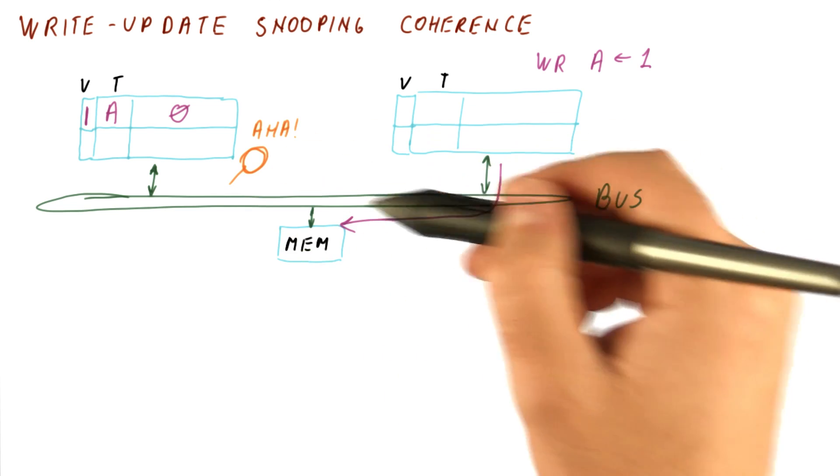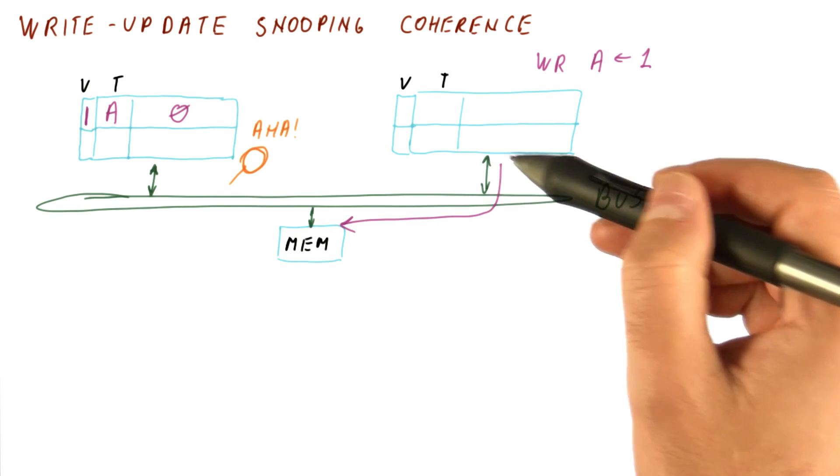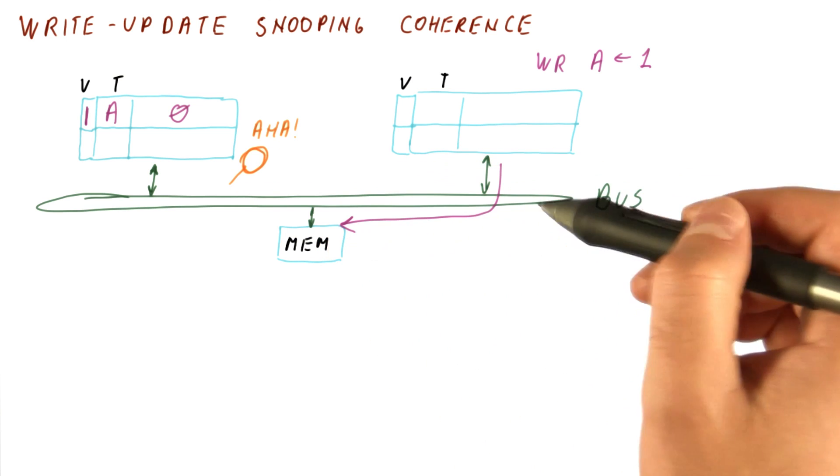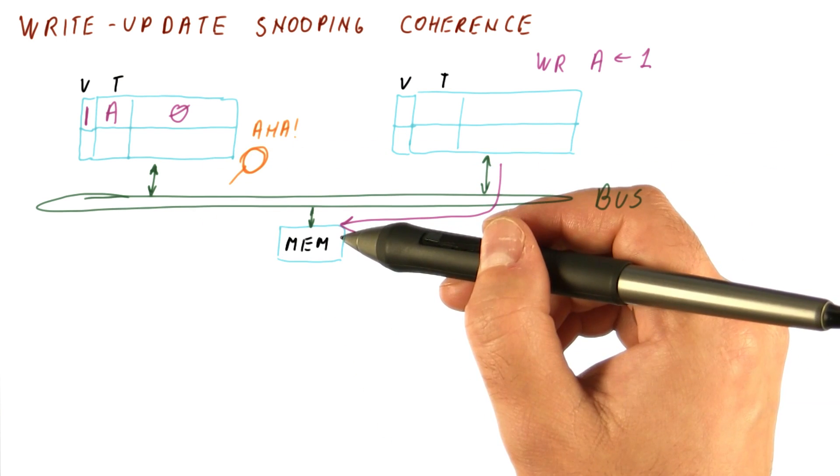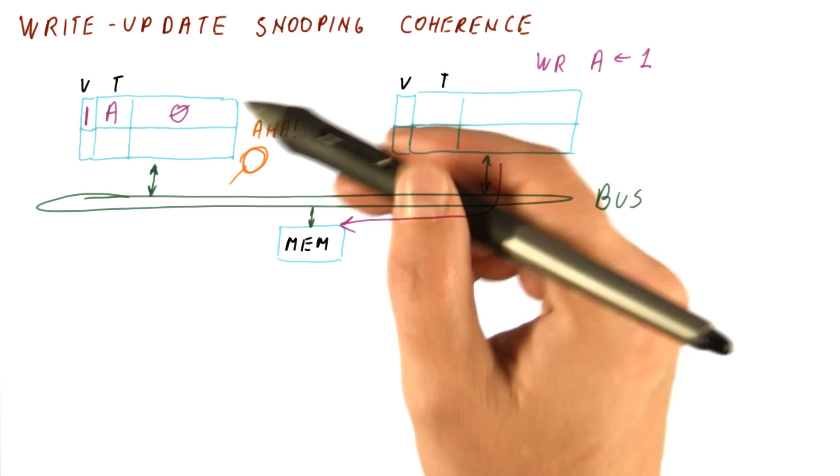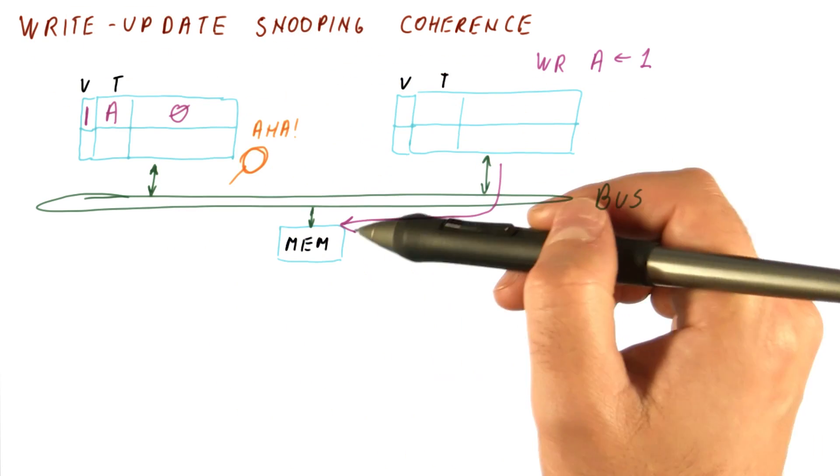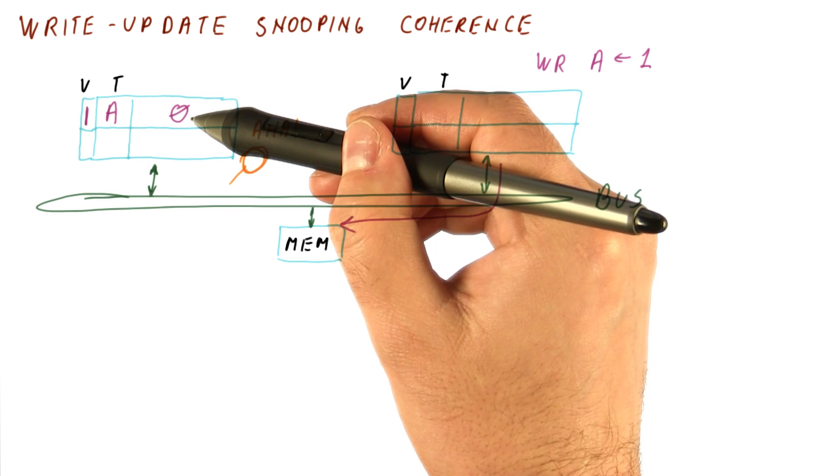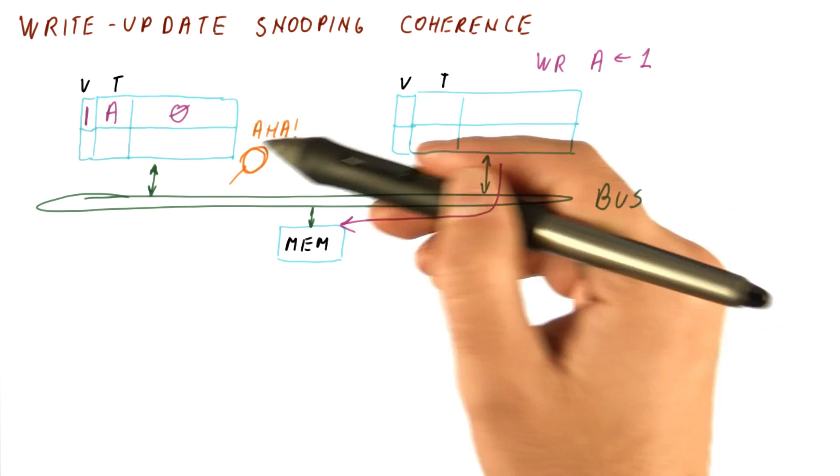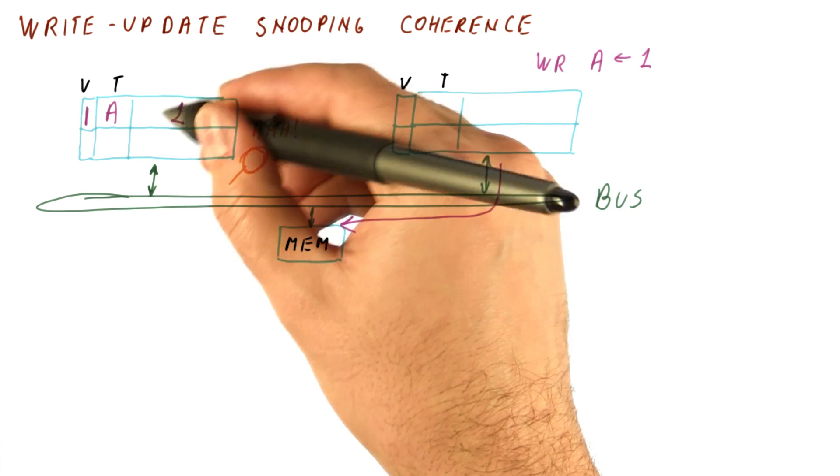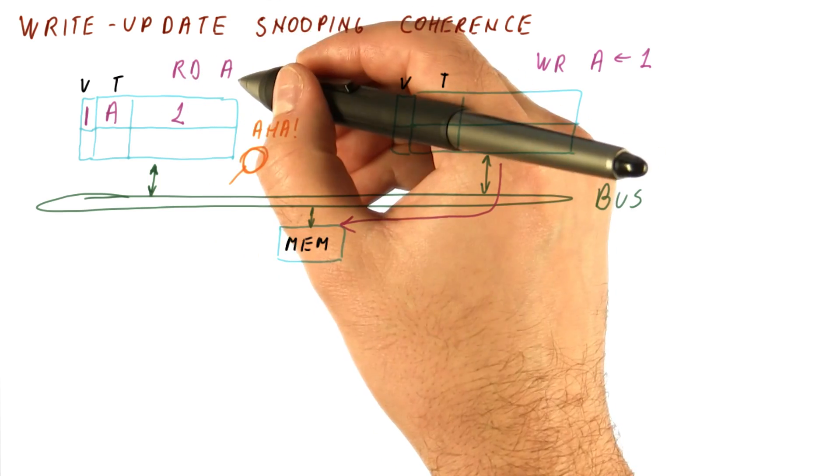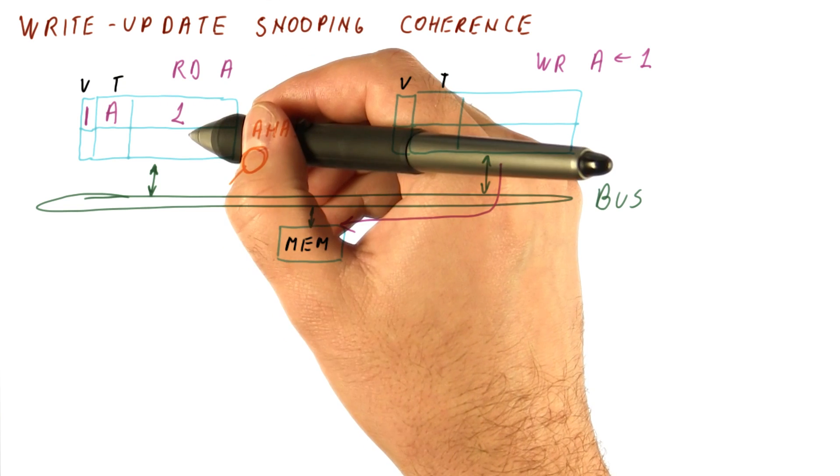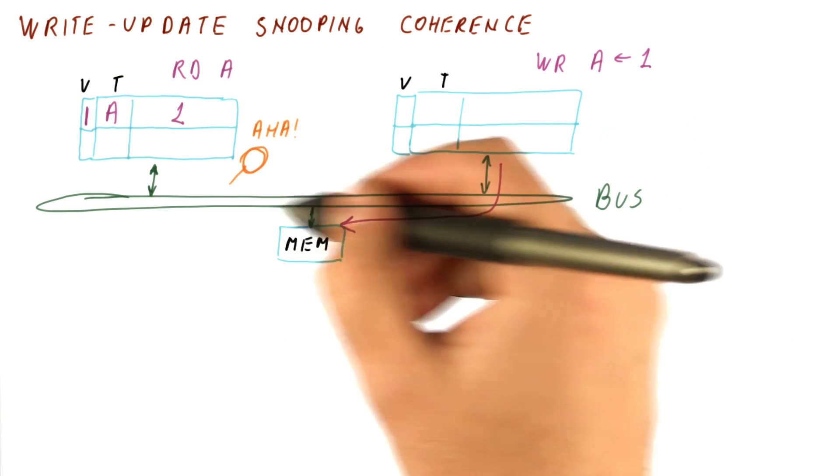This is the snooping part, where we see what's going on on the bus. We cannot miss any of the writes happening on another core because we are monitoring the bus, and all writes have to go through the bus. The write update part is that when we see a write, we update our copy of the data with the value that is being written. So this cache now gets a one here. If we read A after this, we're going to get this one, ensuring correct behavior.